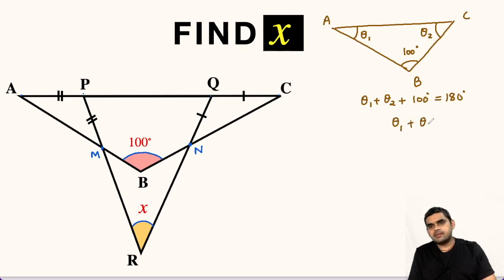From here we get theta 1 plus theta 2 equals 180 minus 100, that is 80 degrees. So this is theta 1, this is theta 2.